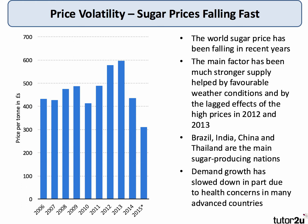The explanation for that, by and large, is that there's been a much more favourable supply-side condition in the market — a significant increase in market supply, partly triggered by the high prices in 2012 and 2013, with increased supply of sugar from countries like Brazil, India, China, and Thailand.